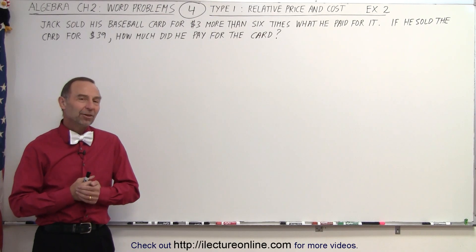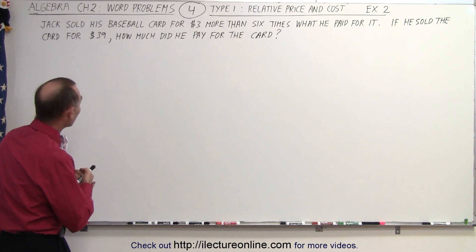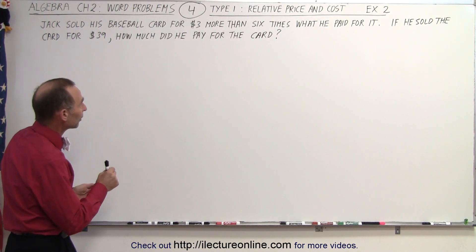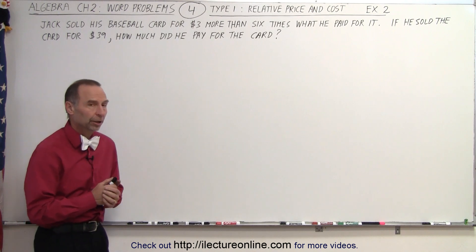Welcome to ElectronLine. Here's our second example of Type 1. Jack sold his baseball card for $3 more than six times what he paid for it. If he sold the card for $39, how much did he pay for the card?